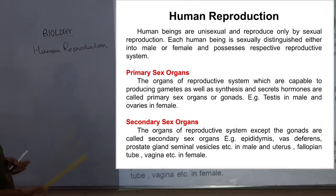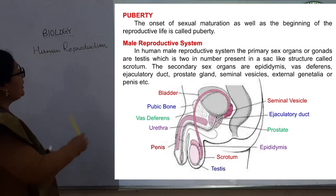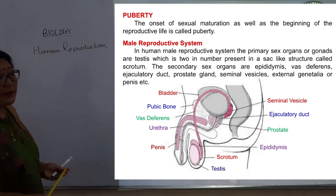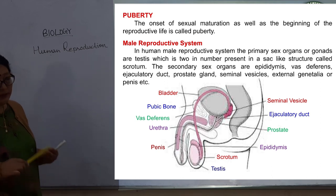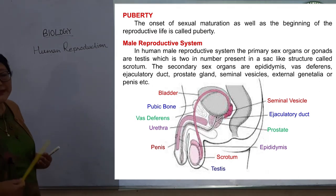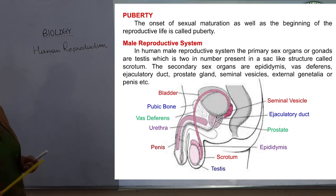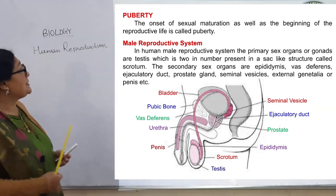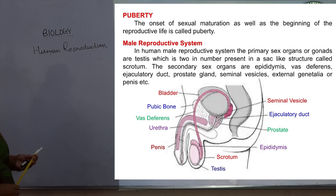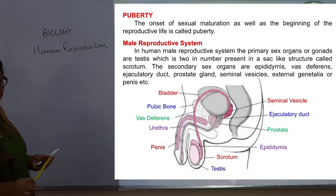Next heading is puberty. When an individual is reproductively mature or sexually mature, it means puberty, just like adolescence. The onset of sexual maturation as well as the beginning of the reproductive life is called puberty.